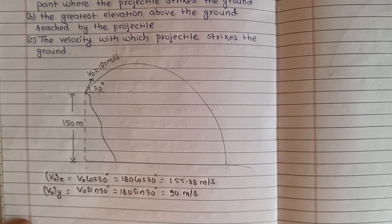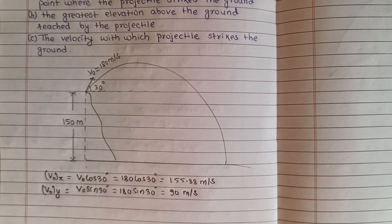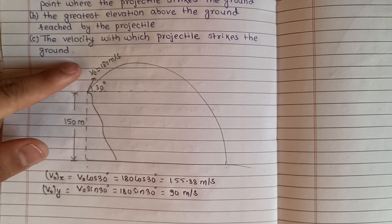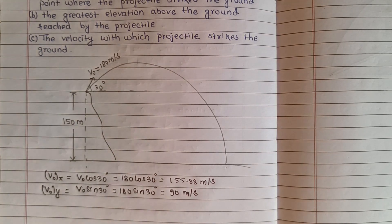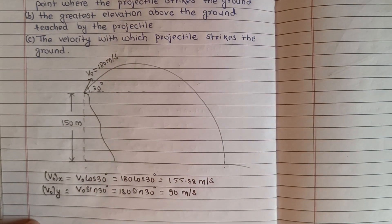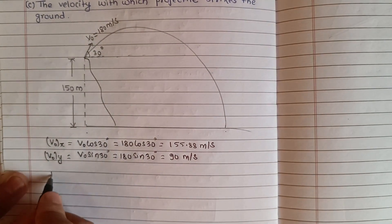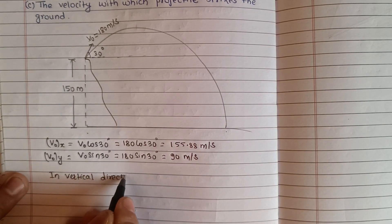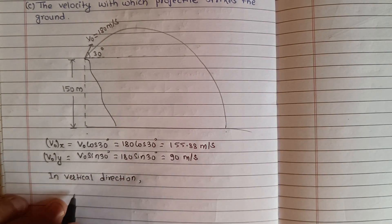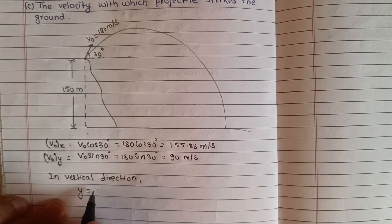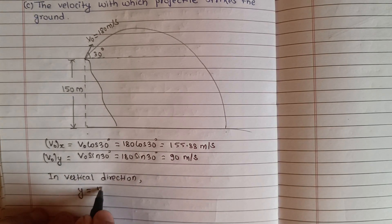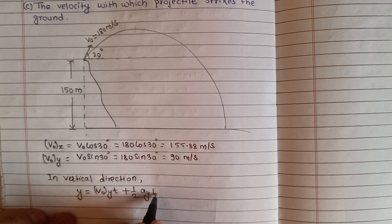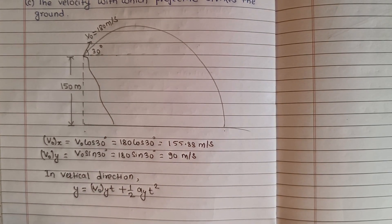To find the time of flight, we use the vertical distance of 150 meters. Using the position equation in the vertical direction: y equals v₀y·t plus one-half·ay·t².